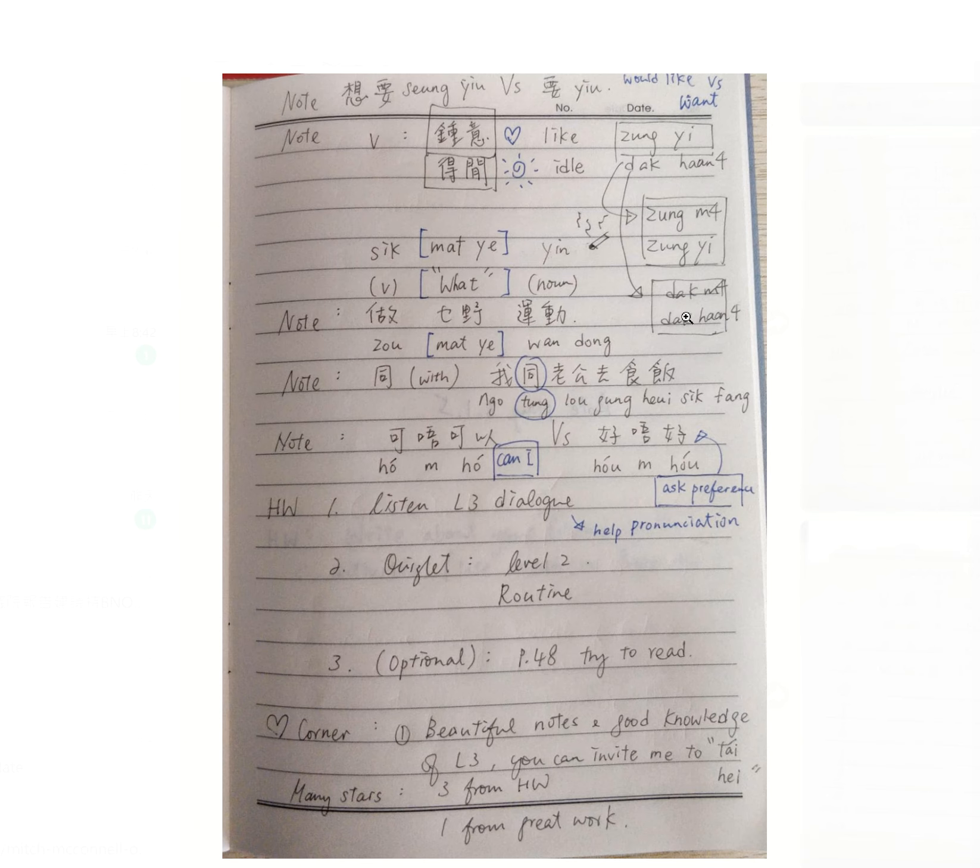So in this case, 中意 is - you cannot - you can kind of do it in this way to make it into a question, but you cannot say 中唔中. Like 中唔意, like you cannot put the word here, 中唔意, because both words have to go together to mean like. You cannot, you just use the first word, 中唔中.